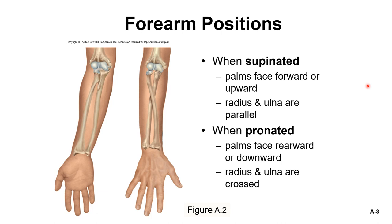Now we need to talk about the forearm positions. When supinated, your palms face forward or upward. The radius and ulna are parallel — the radius is on the outside and the ulna is on the inside. When pronated, the palms face rearward or downward, and the radius and ulna are crossed.